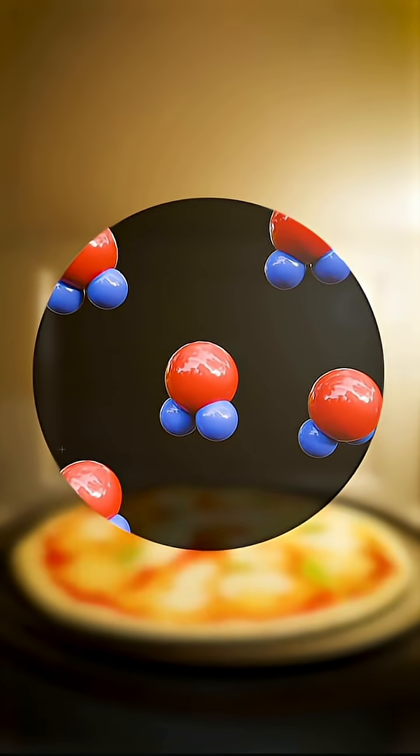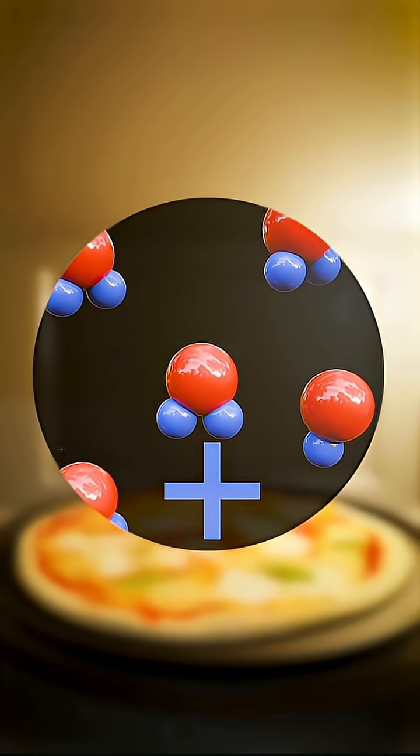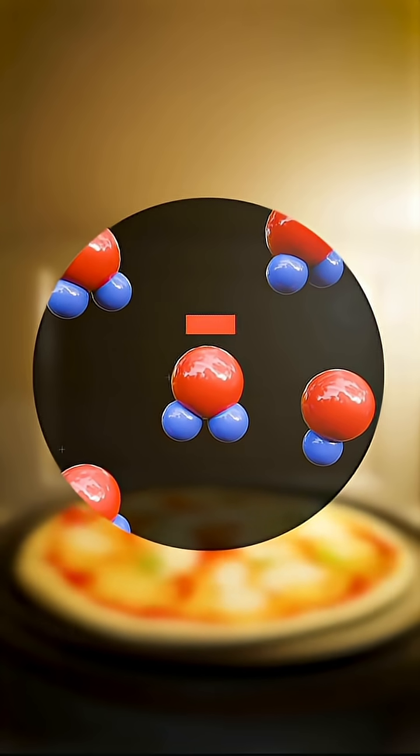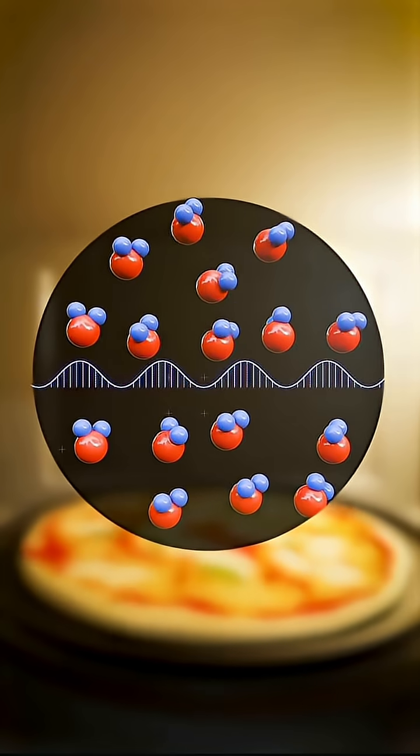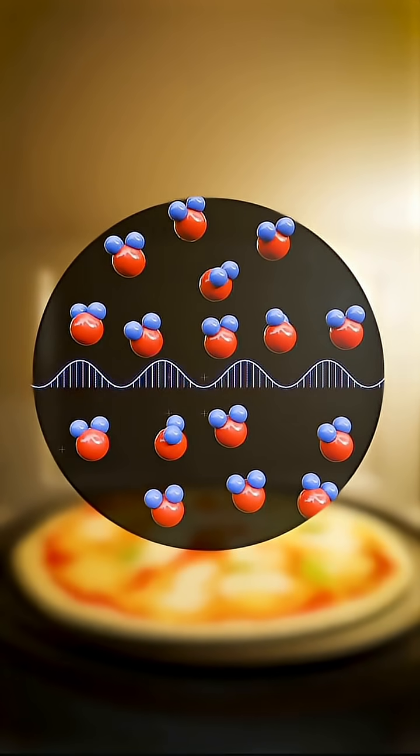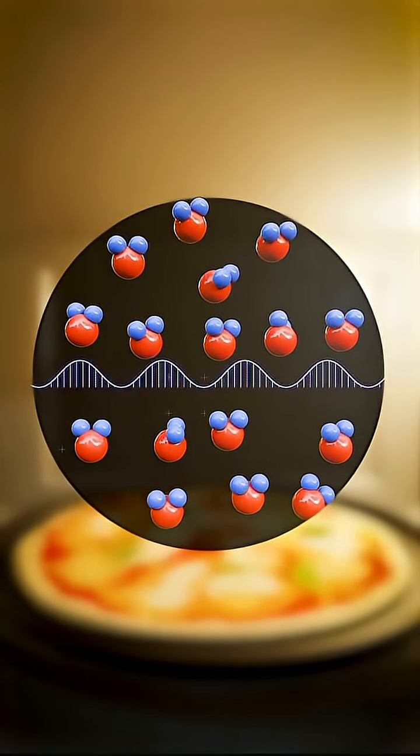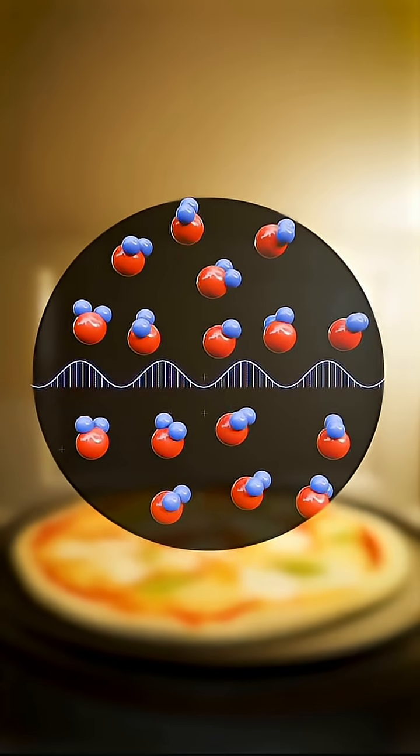Water molecules inside the pizza have a positive hydrogen end and a negative oxygen end. Microwaves cause these water molecules to rotate a million times per second as they try to align with the changing electric field, and this rapid motion creates friction.